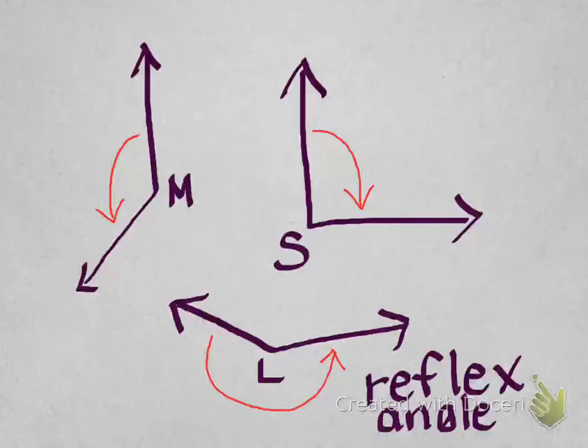At the bottom, you can see what looks like the red arrow is pointing to the outside of the angle, and when we see something like that, that is called a reflex angle.